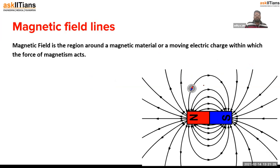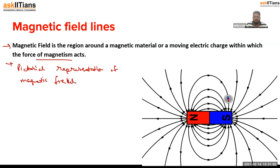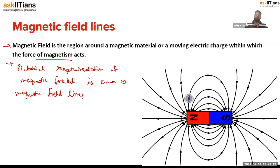Magnetic field is the region around the magnetic material on a moving electric charge within which the force of magnetism acts. Magnetic field lines are the pictorial representation of magnetic field — because in reality you cannot observe magnetic field with your eyes, so to represent it on paper we use the concept of magnetic field lines.